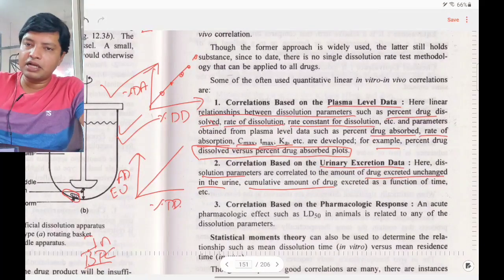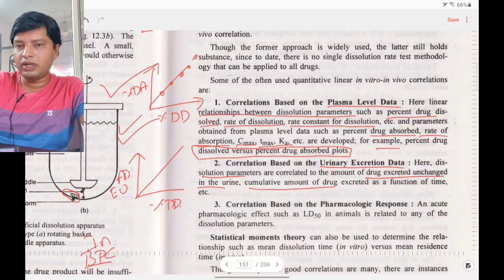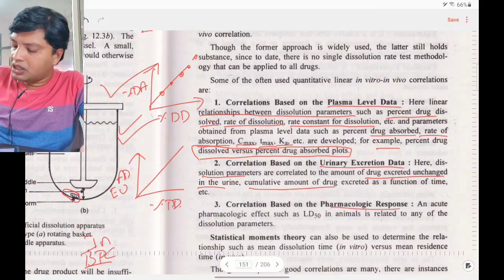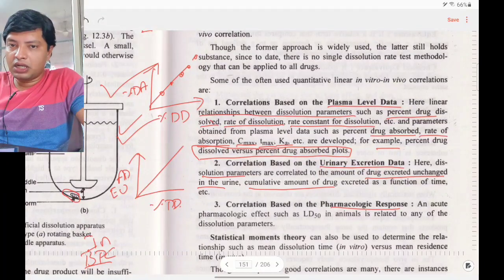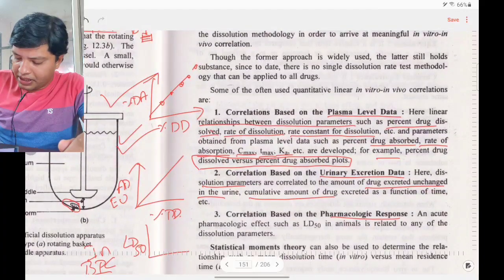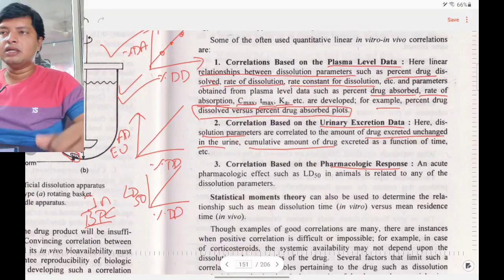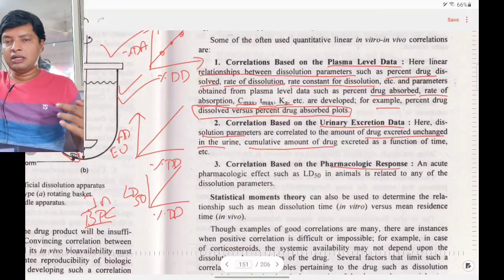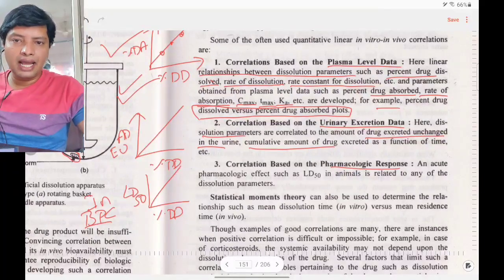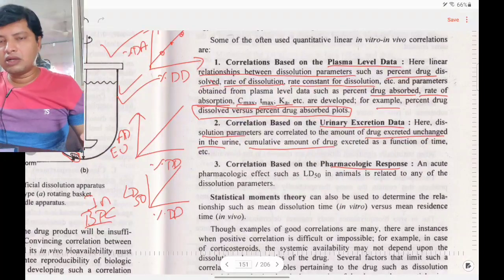In summary: IVIVC can be established using plasma concentration versus percentage drug dissolved, or urinary excretion (amount of drug unchanged in urine) versus percentage drug dissolved. A third approach is based on pharmacological response: percentage drug dissolved versus pharmacological action such as LD50. The amount dissolving in vitro determines how much is absorbed and shows its pharmacological action, which is plotted on the y-axis.